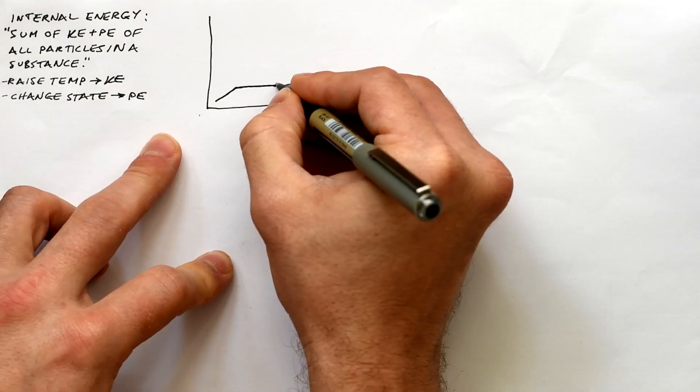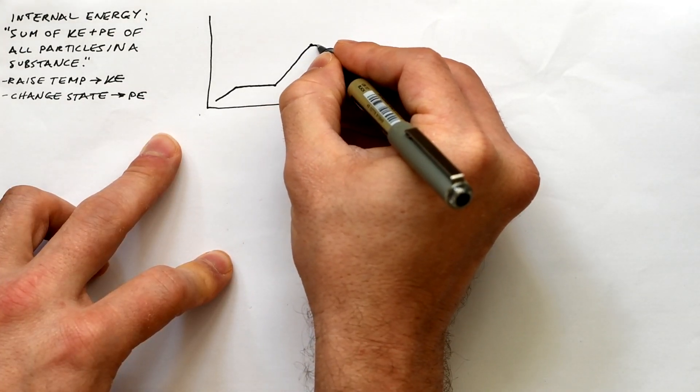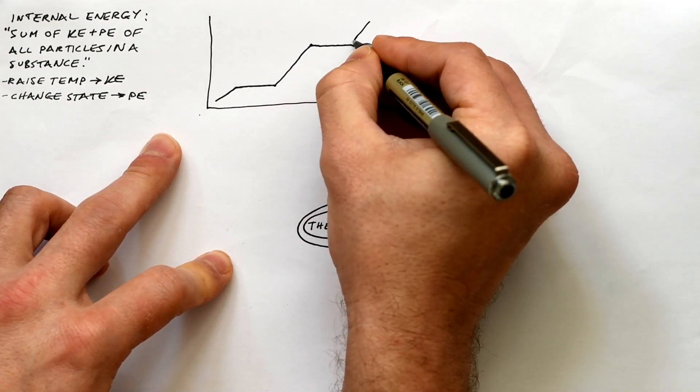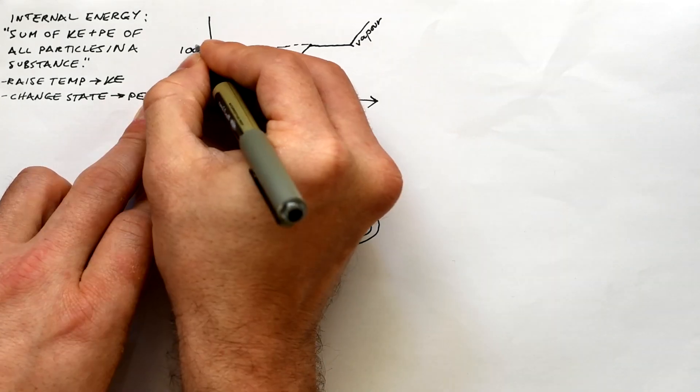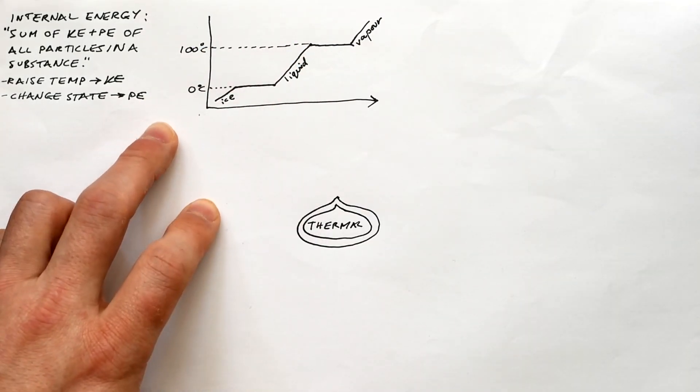We can draw a heating curve for something like ice, and over time, as we're giving it heat, we can see that the temperature goes up, but then it flattens out when it changes state at zero and 100 degrees Celsius.